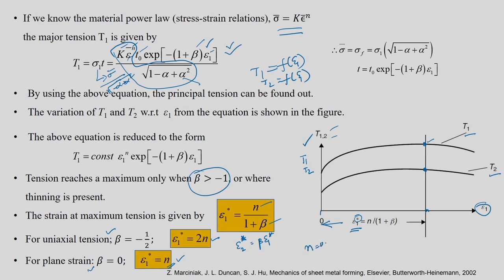For example, if n equals 0.22, epsilon_1* in uniaxial tension is 0.44, but in plane strain it is only 0.22. So the material reaches failure or instability in plane strain much earlier than in uniaxial tension. This will lead into the next chapter where we develop theories for instability.